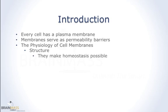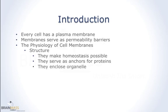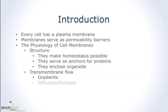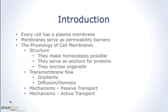We're going to look at how cell membranes make homeostasis possible, how they serve as anchors for proteins, and how they can enclose certain organelles — in which case they're not called cell membranes, they're simply called lipid bilayers. We're going to look at how things move across lipid bilayers, paying special attention to gradients, the basic process of diffusion, and the special case of diffusion known as osmosis. Then we're going to talk about specific mechanisms, focusing on the differences between passive transport and active transport across the membrane.